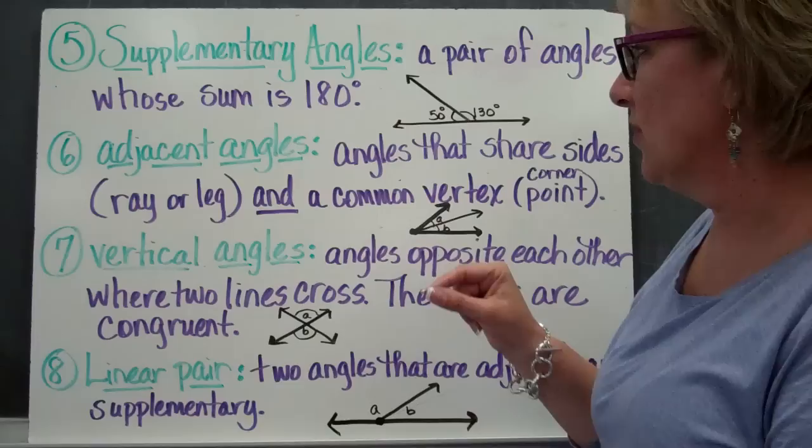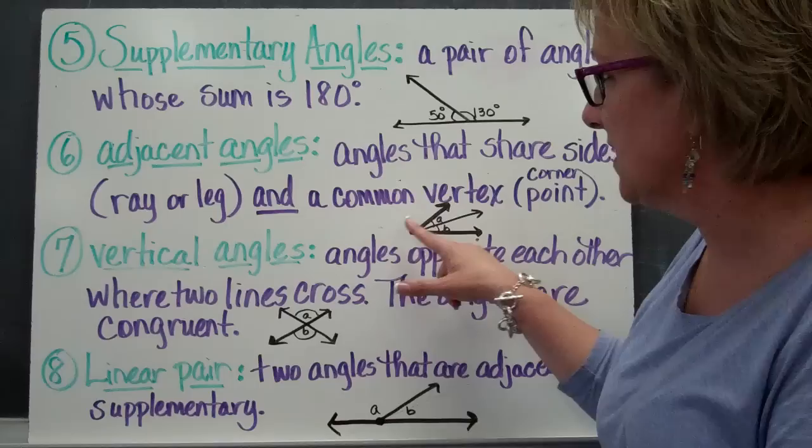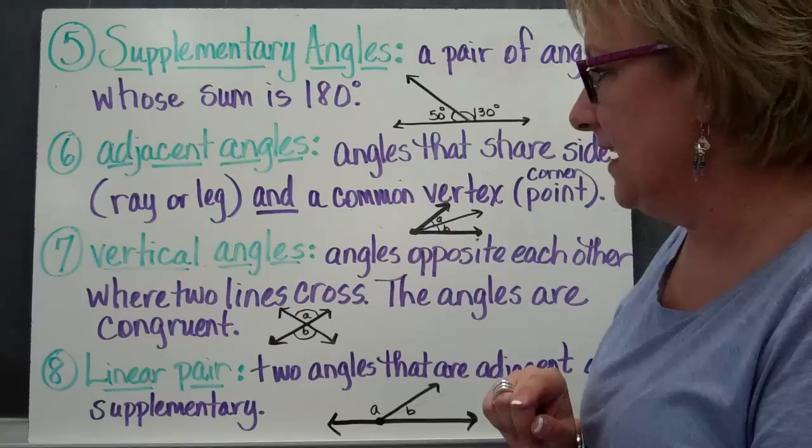Adjacent angles are angles that share sides — either a ray or a leg, as we call it — and a common vertex or corner point. So their angles are all going to be right there together. Adjacent angles are going to be side-by-side angles.